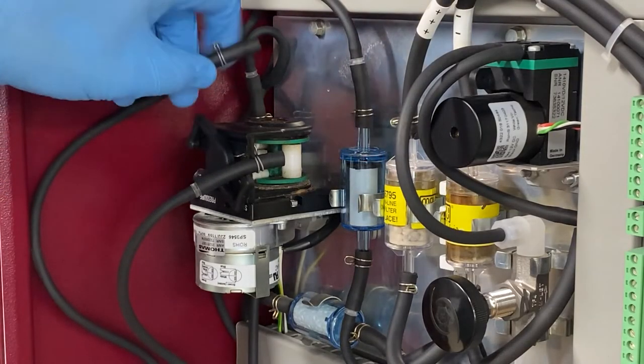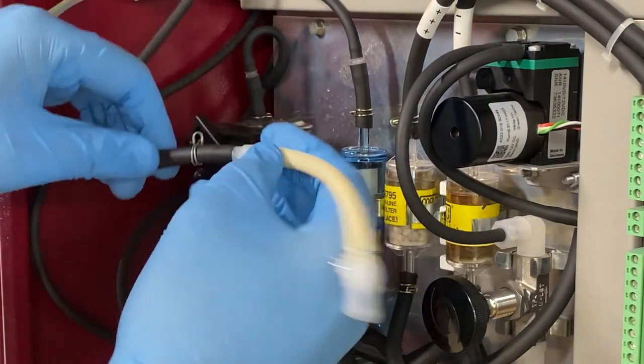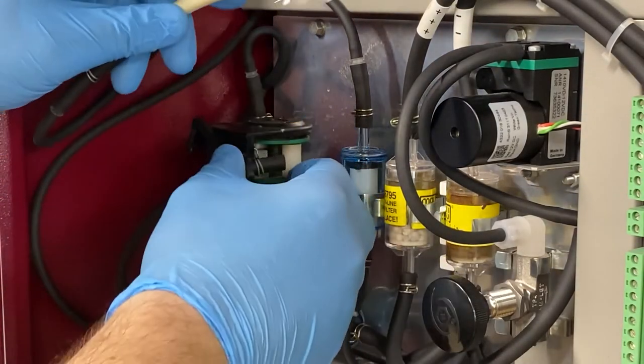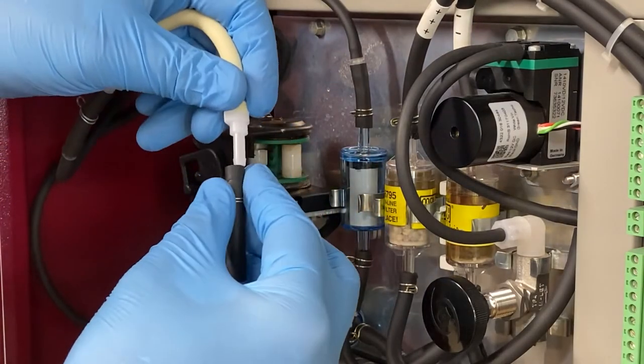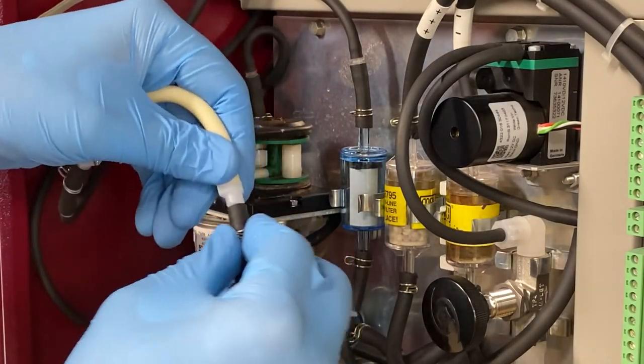To replace the condensate pump tube, first insert the ends of the new one into the condensate pump's external tubing and then re-tighten the metal clasps.